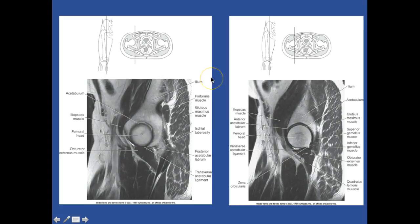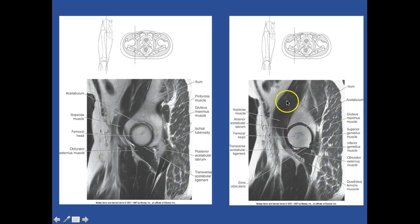This one is more medial than this one - this one is lateral. Starting with the lateral one: here's your ilium, your acetabulum, your gluteus maximus, your superior gemellus. I can't tell the difference between the superior and inferior, so I just have you label the one. The obturator externus, your quadratus femoris muscle is down here. I want you to know your femoral head, your anterior acetabular labrum, and your iliopsoas muscle coming down. This one is more medial - we have the ilium, your piriformis muscle, your gluteus maximus. Here's your ischium, your posterior acetabular labrum, and we've got your obturator externus, your femoral head, your iliopsoas coming down, and your acetabulum.